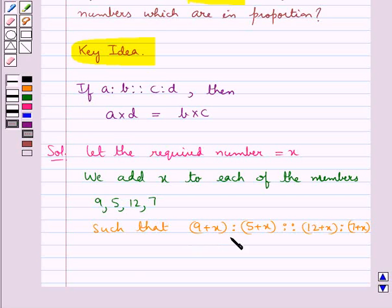Now that these numbers are in proportion, the product of extremes, (9+X)×(7+X), is equal to the product of means, (5+X)×(12+X).